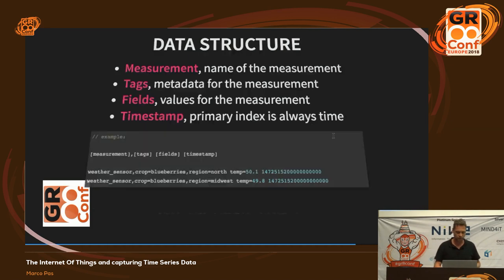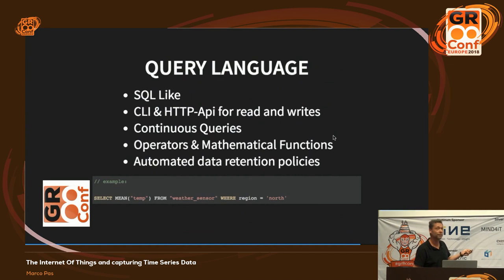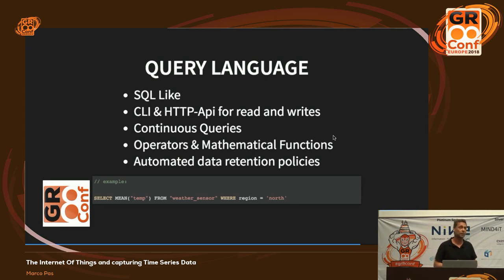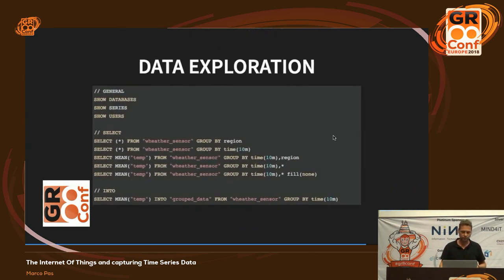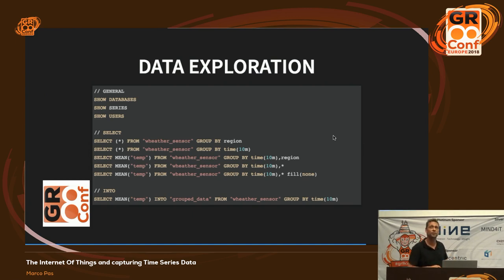InfluxDB has a simple query language. For example, if you have values stored in a table called 'weather_sensors,' you can select the mean from weather_sensors where a specific region - it feels very SQL-like. If you already know SQL queries, these InfluxDB queries are fairly easy to compose. You can also do group by time - for example, get the average temperature from the weather sensor table, grouped by 10 minutes and also by region. I'll show you later how it gives you a nice way to gather data from your systems.